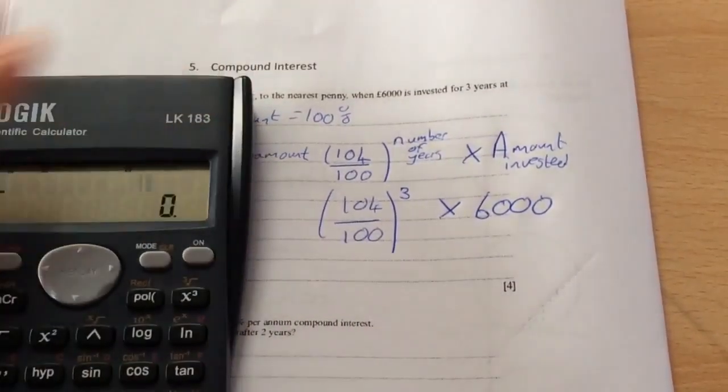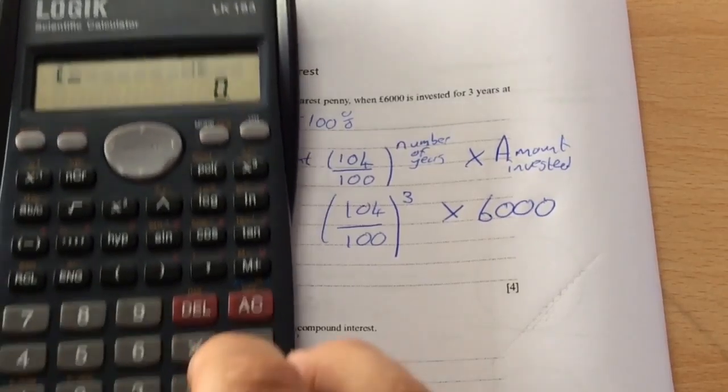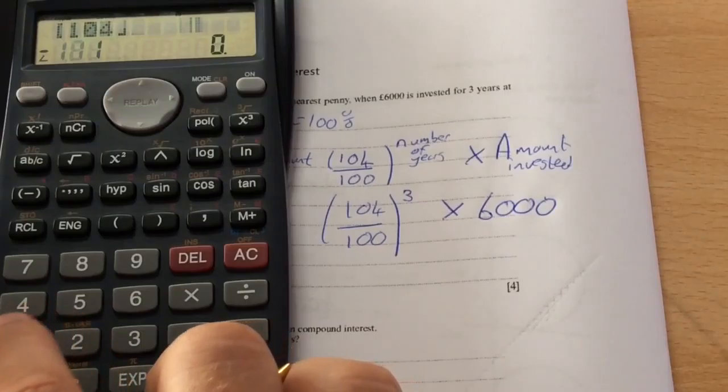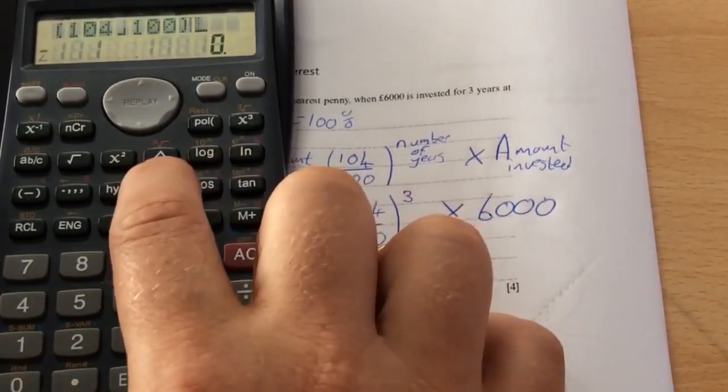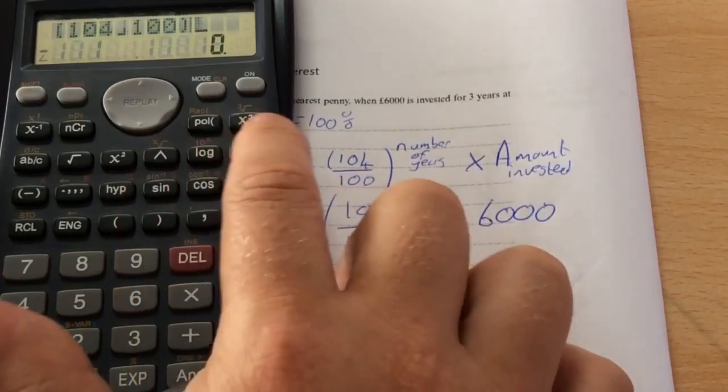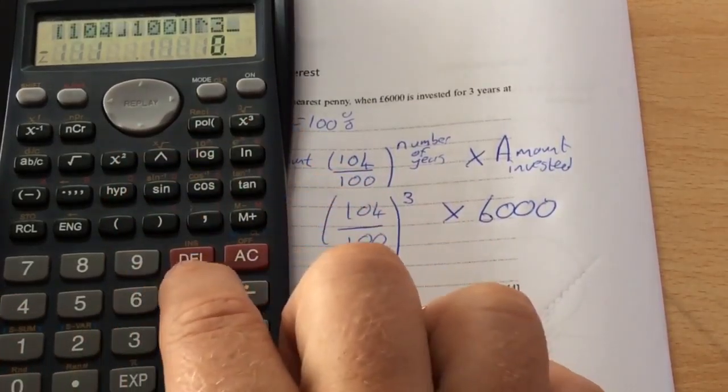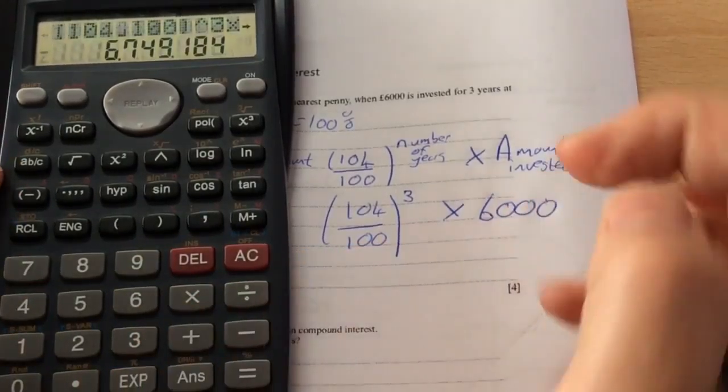You can either do 104 over 100 by using the ABC button, close brackets. Then it's to the power, so you can either press x cubed or to the power of three, and then multiply by the amount invested, £6000.